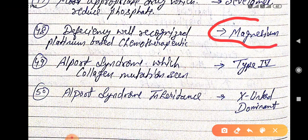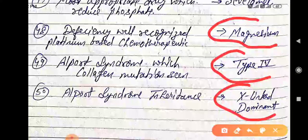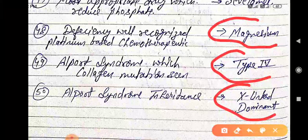Alport syndrome. Which collagen mutation is seen? Type 4. Alport syndrome inheritance is autosomal dominant. It's X-linked dominant. Remember, Alport syndrome inheritance is X-linked dominant.